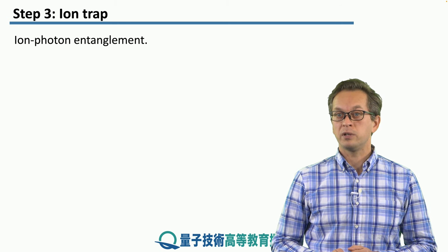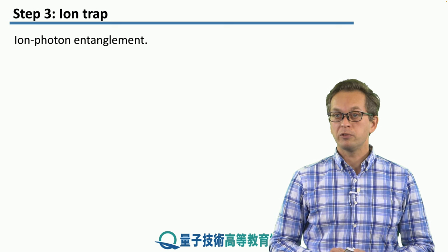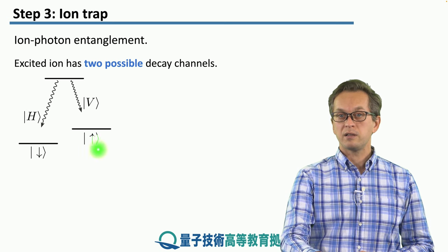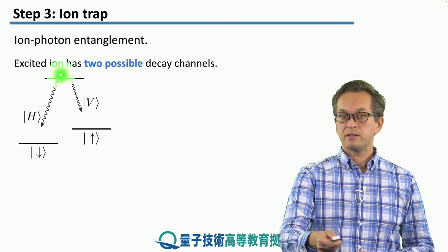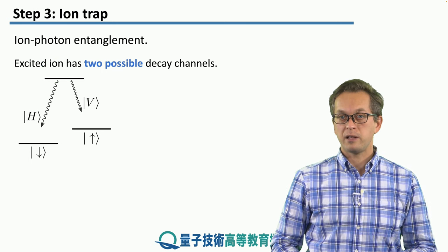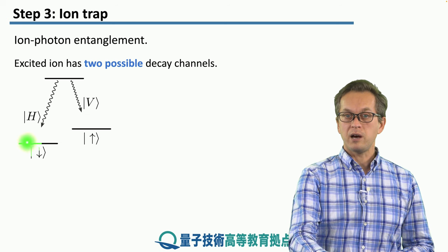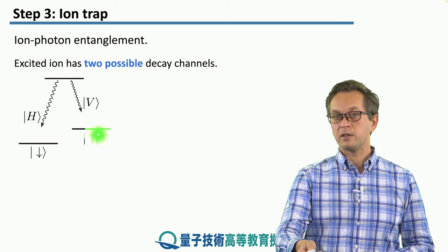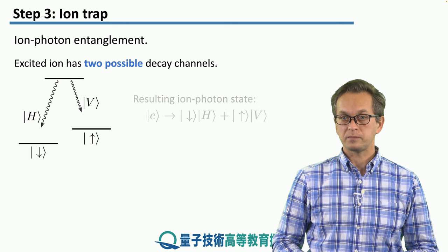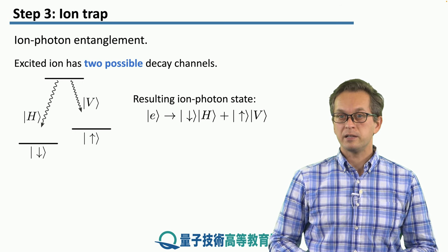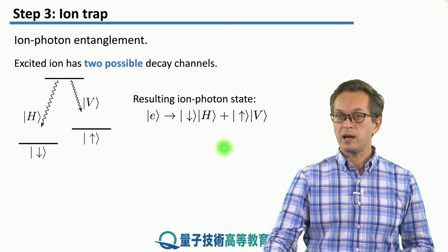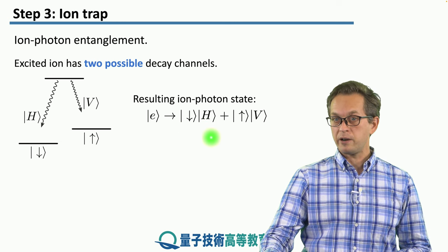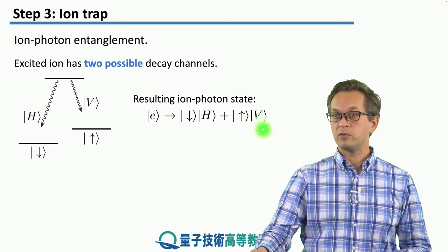How do we achieve ion-photon entanglement? We are looking at ion traps as memories which we'd like to use for quantum networking. This is a ground state manifold with a down-spin state and an up-spin state. If we excite our ion into the excited state, it has two possible decay channels. One channel is to decay into the down state, producing a horizontally polarized photon. The other channel is to decay into the up state, producing a vertically polarized photon. In other words, if we excite our ion and it de-excites, we create a superposition state between the ion and the flying qubit — the photon — where the ion is in the down state and the photon is horizontally polarized, plus the ion being in the up state and the photon having vertical polarization.